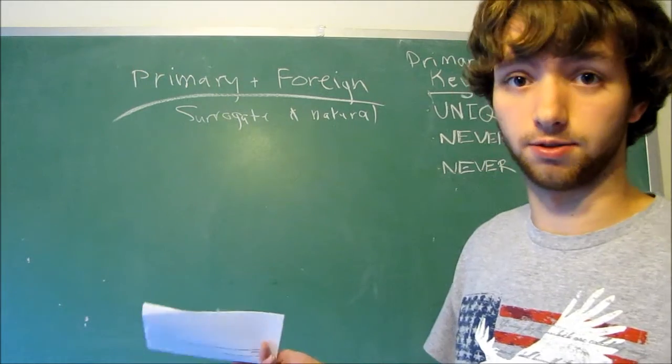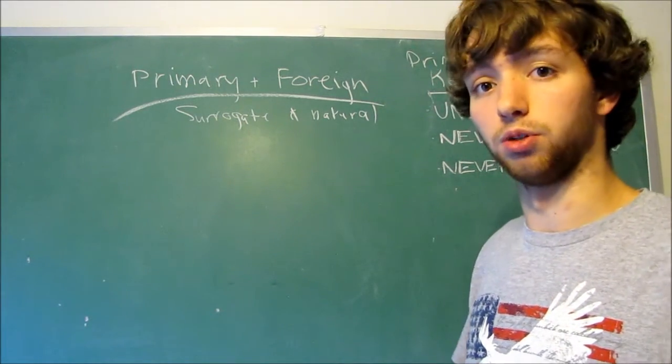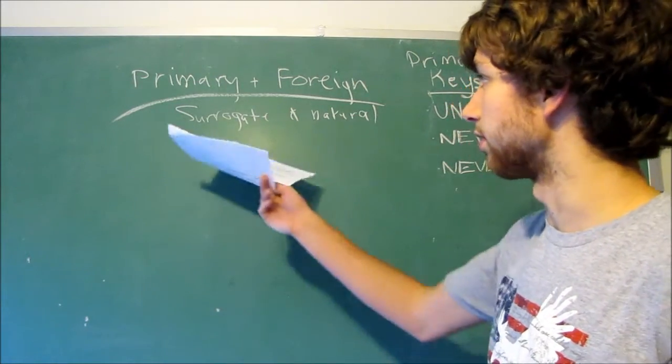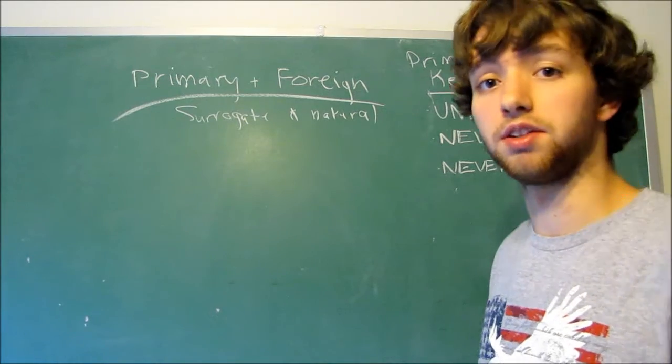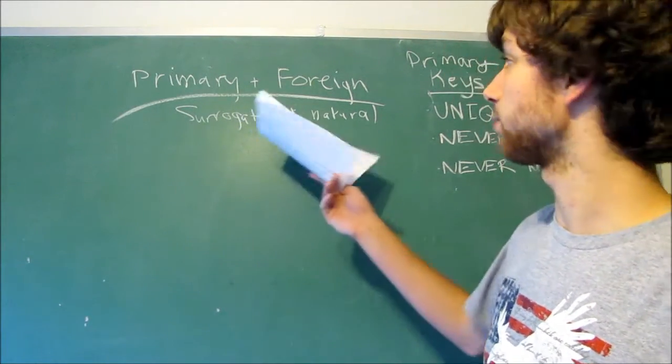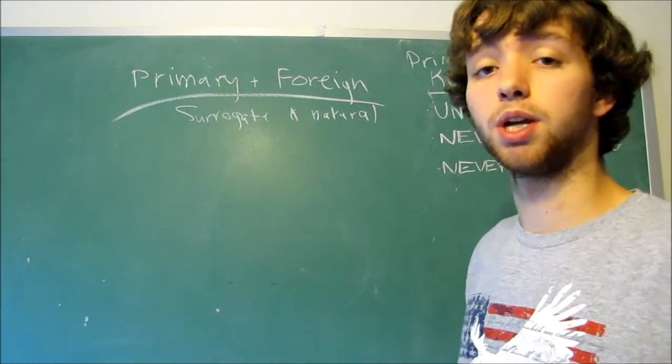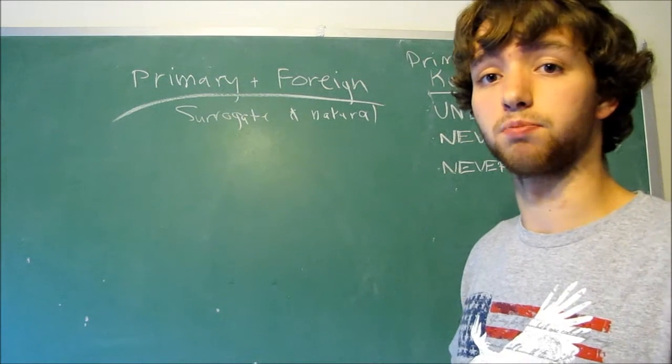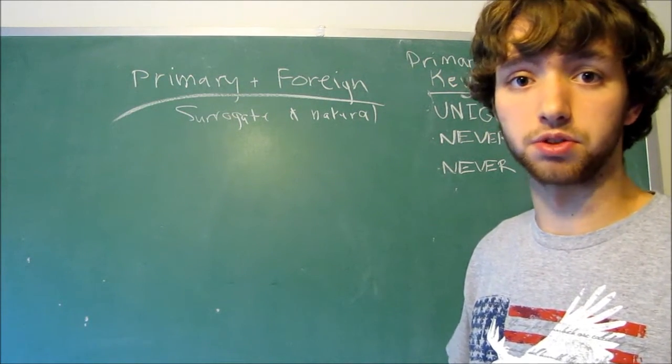But anyways, natural is something that's already naturally in the database, and you just define it as your key. Now, typically, when you want to use keys in your database, which you will because it's a relational database, you will pick either surrogate or natural keys, and you will use them throughout the rest of the database. You're not going to switch from surrogate and natural.